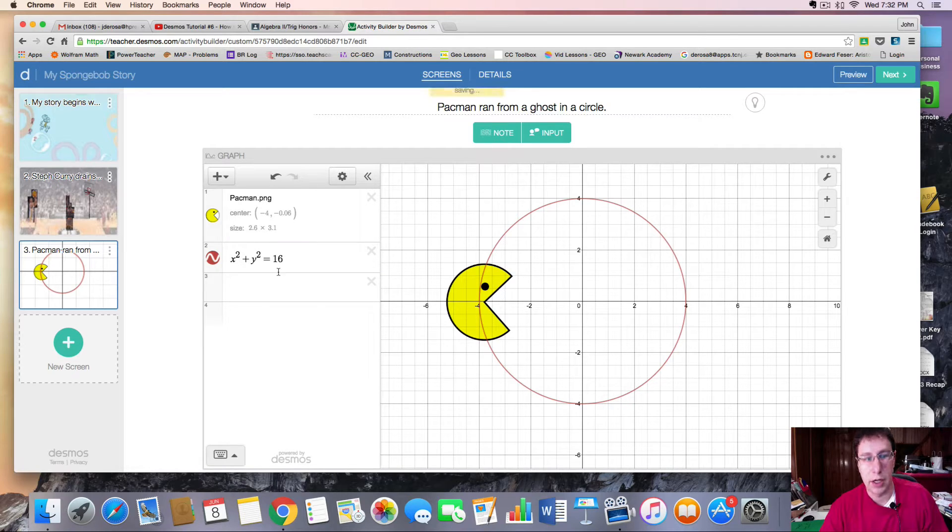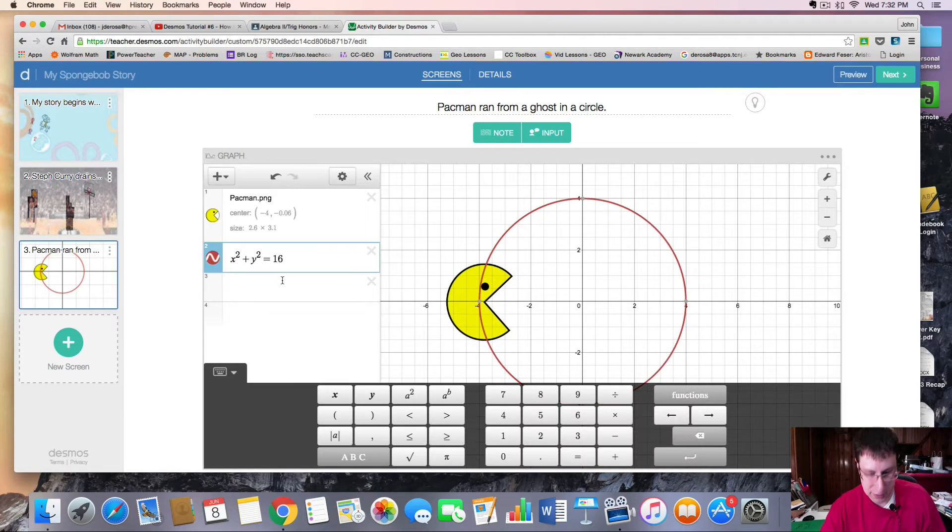So here's a circle that I created with the center at the origin, x squared plus y squared equals 16. However, as you'll quickly realize, there's no way to write this as a function.